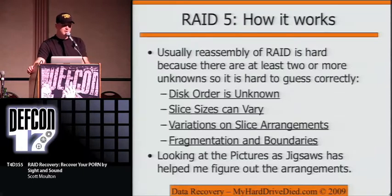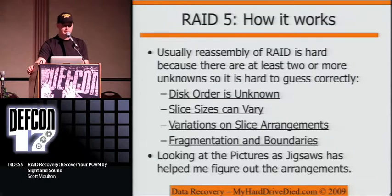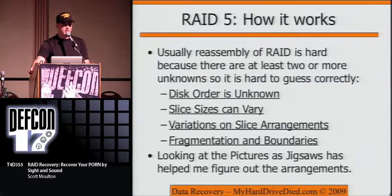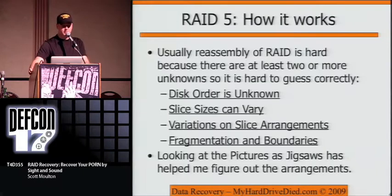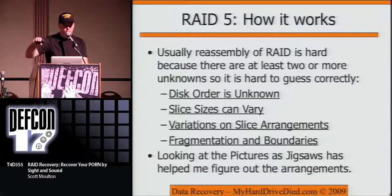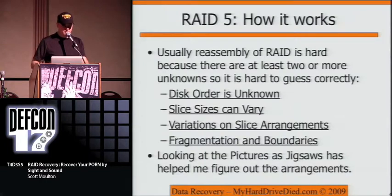If you can convince people to number the drives before shipping them to you, you might figure things out without spending a lot of extra time. Then you've got your variations and slice sizes — sometimes the configuration is stored on the disks themselves and maybe you can't read it. You're going to have to guess. Then you've got the arrangement — usually something the manufacturer chose, not something you can specify. There are basically five or six different types of arrangements. And then you have fragmentation, which you just have to deal with. You'll check multiple pictures — some will be corrupt no matter what. As you click through a dozen or 20 of them, you'll figure out which ones make sense.